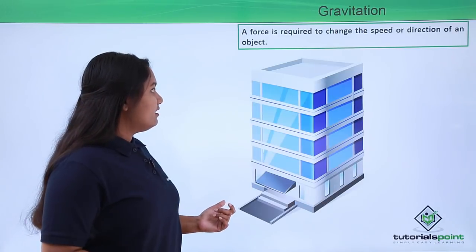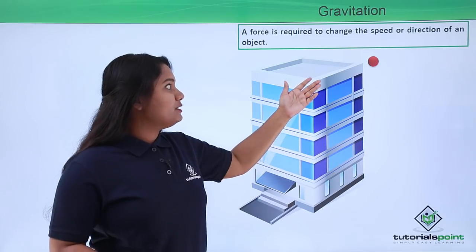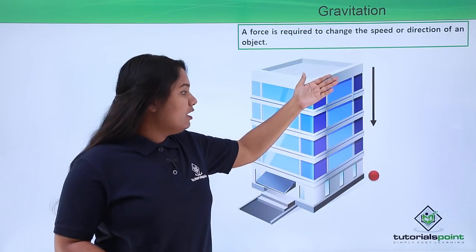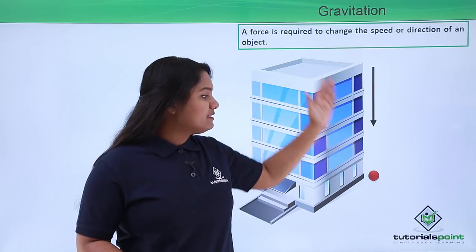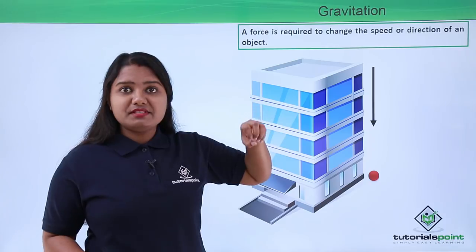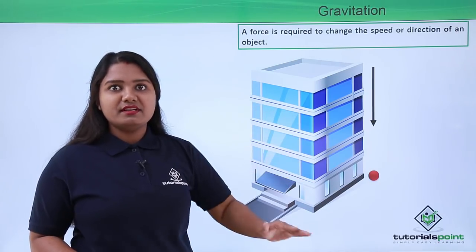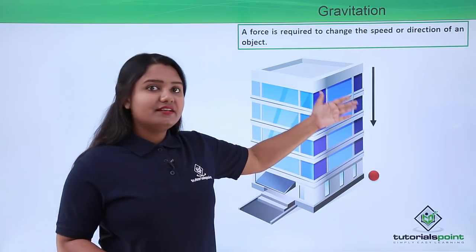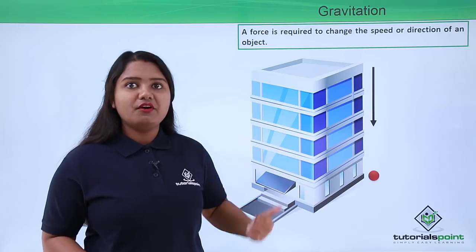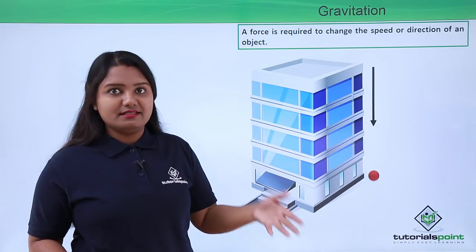Now let's do an activity. Let's drop a ball from the top of a high-rise building. When we drop the ball, it falls down immediately and hits the ground. We have simply dropped the ball — we have not applied any kind of force to it. But even though we didn't apply any external force onto the ball, the ball starts moving and falls down and hits the ground.